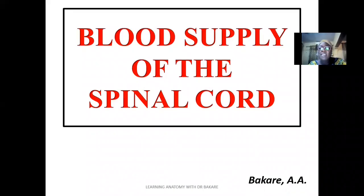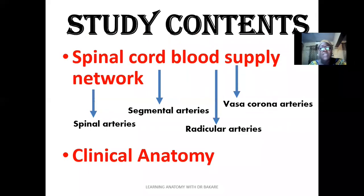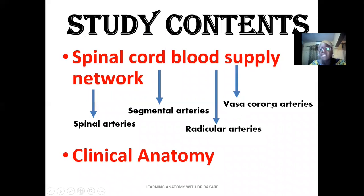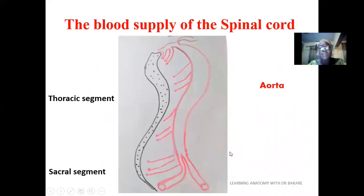Welcome again. Let's look at the blood supply of the spinal cord. These are study contents under the spinal cord blood supply network. We would look at the spinal artery, the segmental artery, the radicular artery, and the vasocorona artery. We would also look at clinical anatomy.